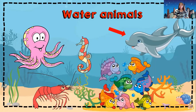Repeat after me: octopus, shrimp, seahorse, fish, and dolphin are water animals. They live in the water; their habitat is in the water. Do you understand?